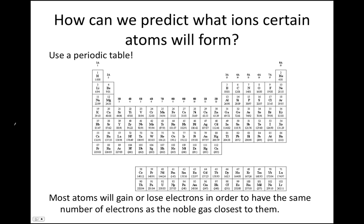When looking at your periodic table, remember that the noble gases are in this last column on the right. So if most atoms will gain or lose electrons to have the same number of electrons as the closest noble gas, then all of the elements in this first column of the periodic table will want to lose one electron and will form ions with a positive one charge.